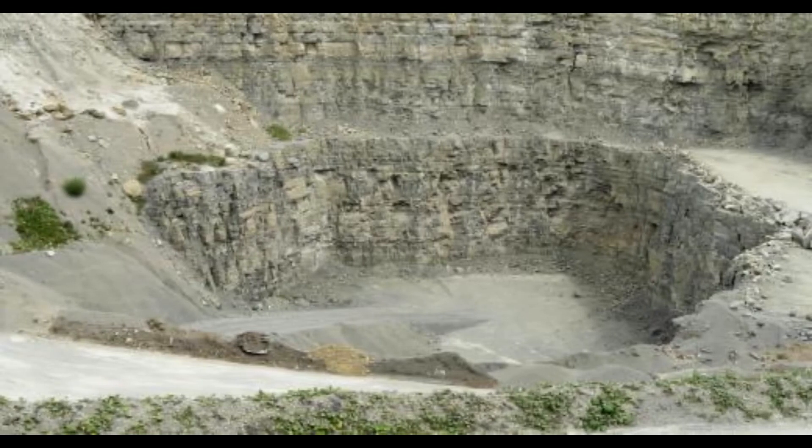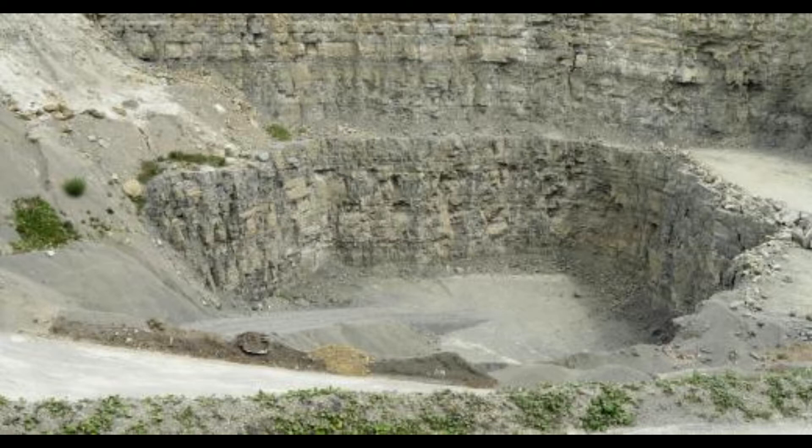Chalk dust is the natural by-product of using a chalk crayon on a blackboard. As the chalk is scraped across the rough surface of the board, particles are sent into the surrounding air. Some of this dust settles to the ground or is ventilated outside.